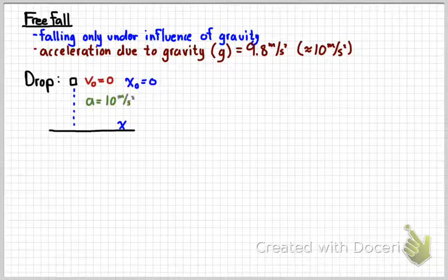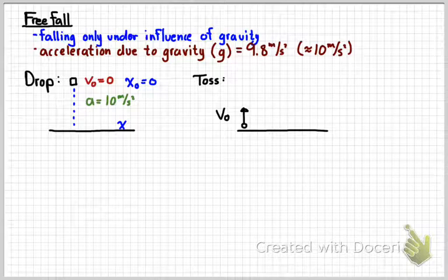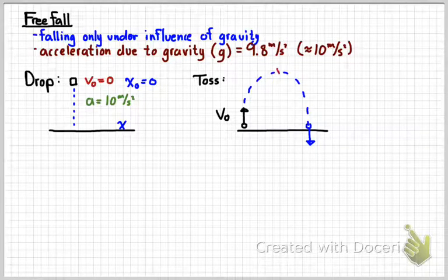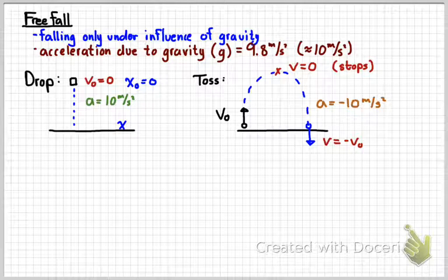When you drop something, it starts with an initial velocity of zero. Call the initial position zero, so the final position will be your x, and acceleration is positive 10 meters per second squared. When you toss something upward it becomes more complicated — since your initial velocity is up, it will come back down. The acceleration must be negative 10 meters per second squared. At the top the velocity is zero — it's momentarily at rest — and just before it returns to the launch position, the velocity equals the initial velocity in magnitude but is negative.